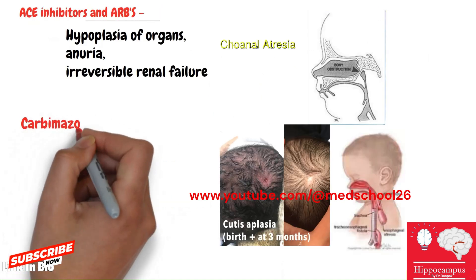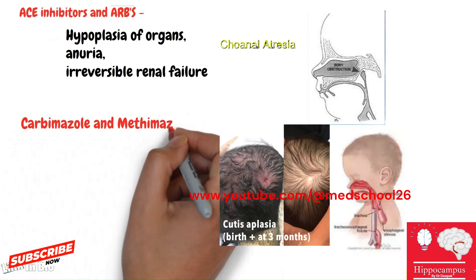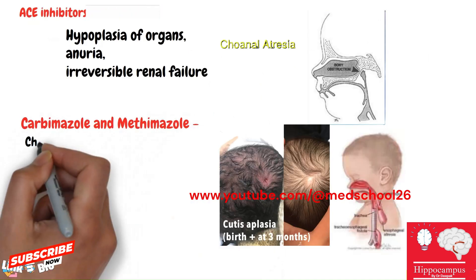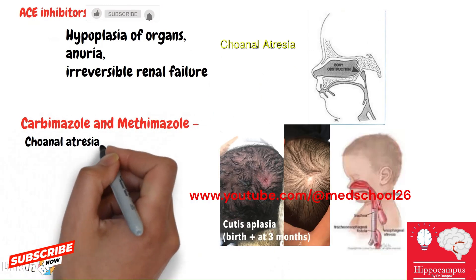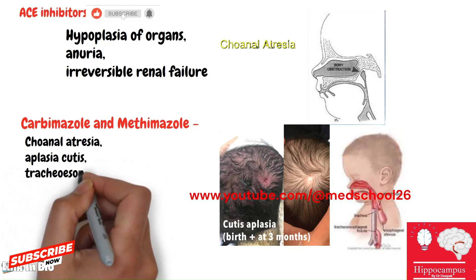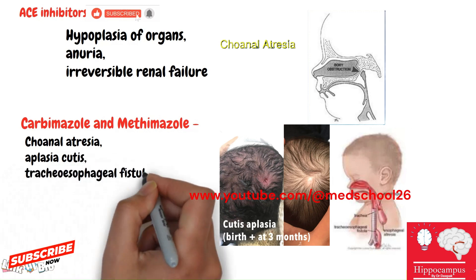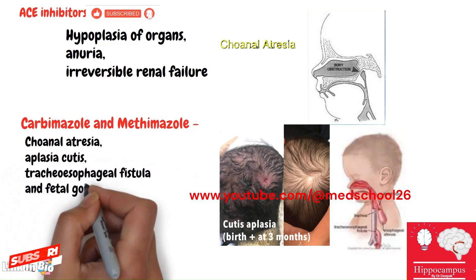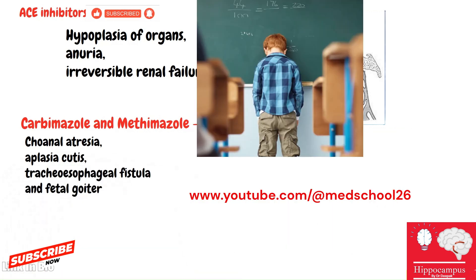Thirteenth: carbamazole and methimazole — cause choanal atresia, aplasia cutis, tracheoesophageal fistula, and fetal goiter.